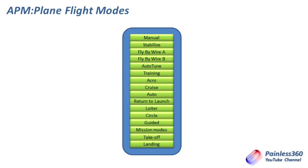For me, the modes I use in APM plane are manual — which I'm used to and quite like — fly-by-wire A, and acro, because the way acro compensates for my sloppy maneuvers makes my aerobatics look a lot better. I also use auto when I have a mission loaded. And the last one is return to launch, which will be the fail safe on all the APM plane models I use from now on — so if something goes wrong I can flick a switch and she'll come back.